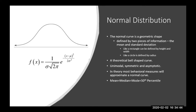Another key property is that the mean, median, and mode are all at the same spot — right in the middle. The mode is there because it's the peak of the distribution. The median is there because 50% of scores are on the left and 50% on the right. The mean is also there because it's the mathematical center of the distribution. It's super cool that they're all in the same spot.